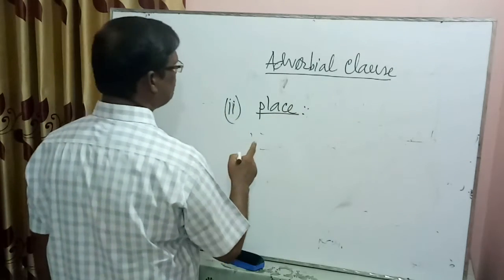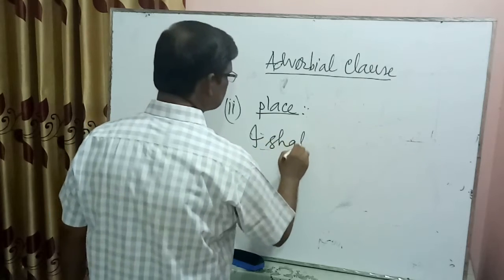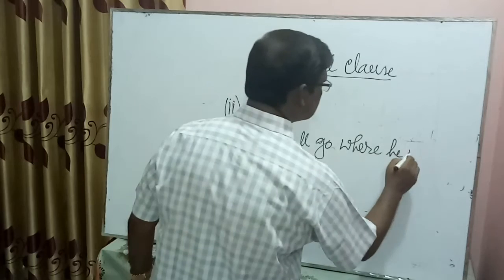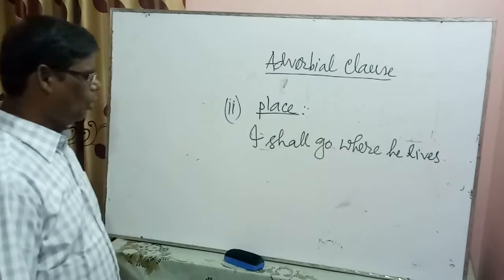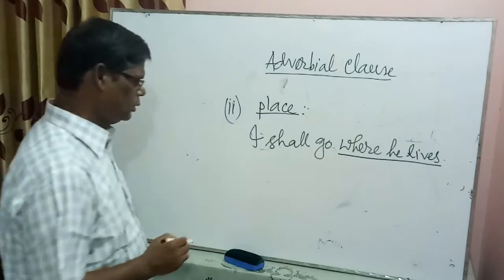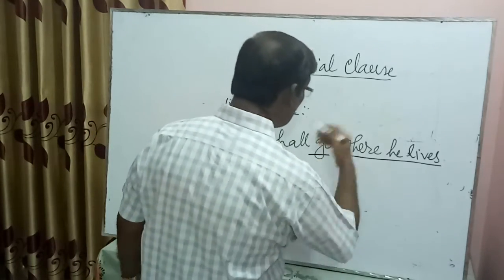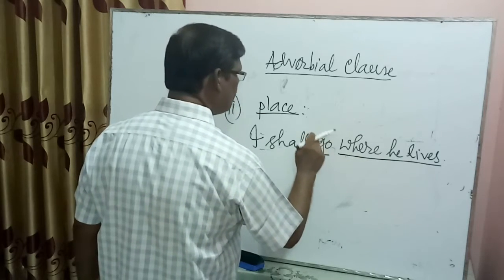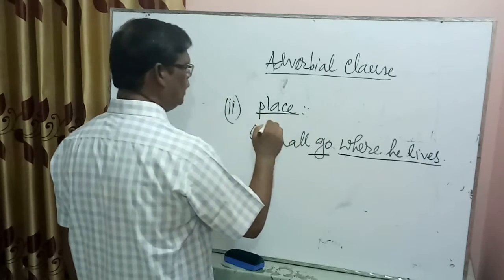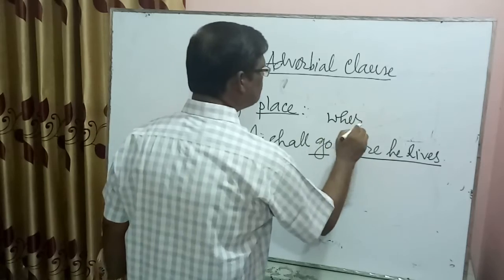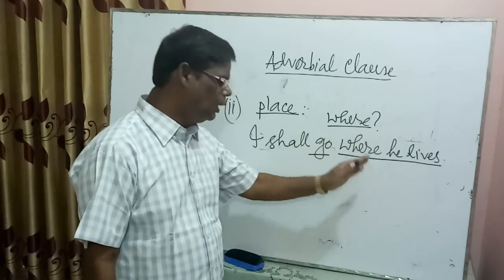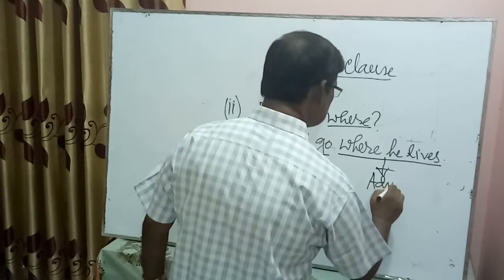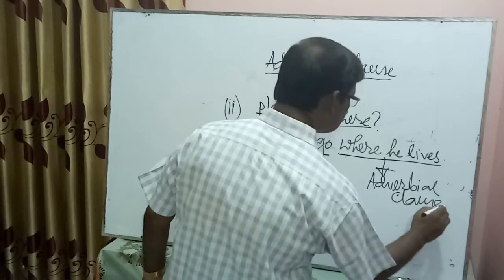An Adverbial Clause can also indicate place. For example: 'I shall go where he lives.' Here, 'where he lives' indicates the place of the verb 'go'. Where will I go? Where he lives. So this is the place of the verb 'go'. Here we ask the question 'where' with the main clause, and the answer we find is the Adverbial Clause of Place. So this is an Adverbial Clause.